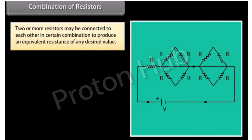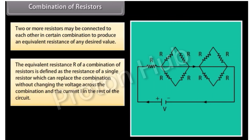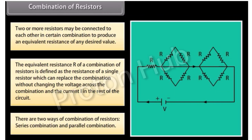Two or more resistors may be connected in certain combinations to produce an equivalent resistance of any desired value. The equivalent resistance R is defined as the resistance of a single resistor which can replace the combination without changing the voltage across the combination and the current in the rest of the circuit. There are two ways: series combination and parallel combination.